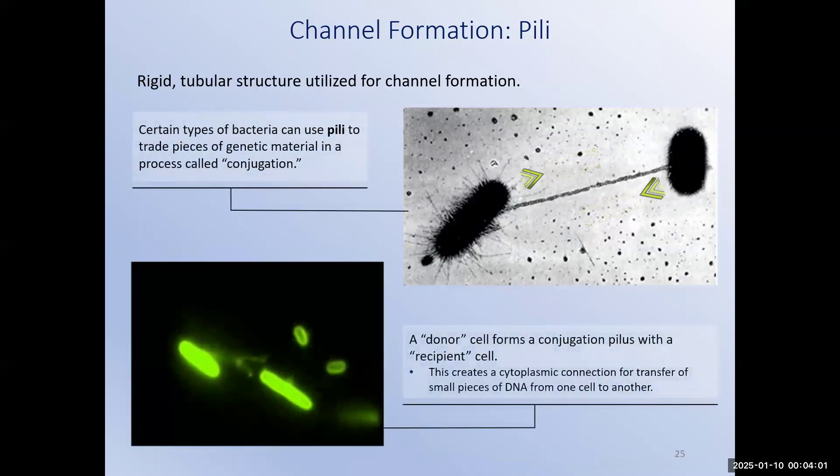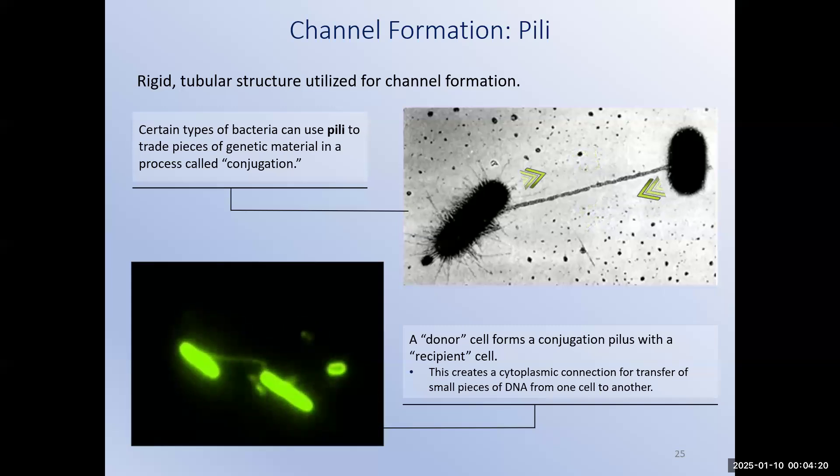Pili are appendages that create channels between neighboring bacterial cells. Pili channels are used in a process called conjugation. In conjugation, pili are formed between two compatible bacteria. The channel is then used to transfer genetic material from the donor cell to the recipient cell. This transfer of genetic material may be of no consequence, or it may add to the recipient's ability to cause disease.